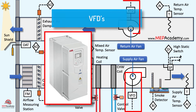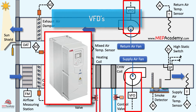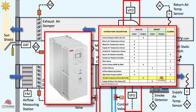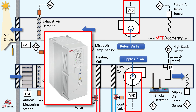One of the primary functions of a VFD on the supply and return fans is to enhance energy efficiency. The VFD allows the speed of the fan motor to be adjusted based on the actual demand for airflow. This prevents the fan from running at full speed constantly, which can result in energy savings especially during periods of partial load. VFDs enable soft starts and stops for the supply fan motor, reducing mechanical stress on the motor and associated components, extending the lifespan of the equipment. The gradual acceleration and deceleration also contribute to smoother operation.